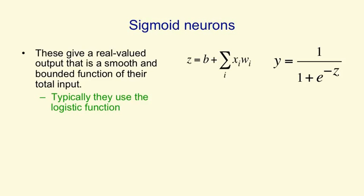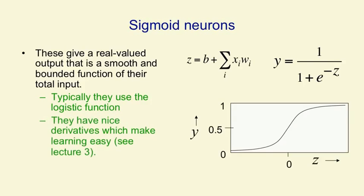If you think about that, if the total input's big and positive, e to the minus a big positive number is 0, and so the output will be 1. If the total input's big and negative, e to the minus a big negative number is a large number, and so the output will be 0. So the input-output function looks like this.